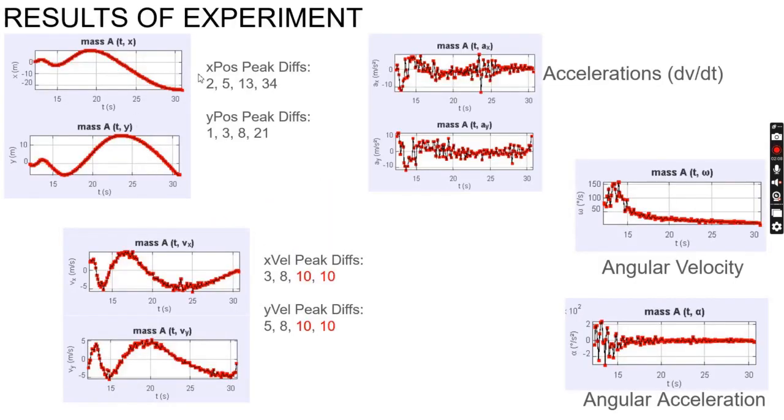The main thing we wanted to look at: graphs of position over time for x and y. We're looking at differences in peak values. For x, the first peak is at 2, next peak difference is 5, next is 13, next is 34. That's every other value in the Fibonacci sequence.